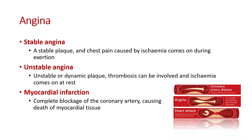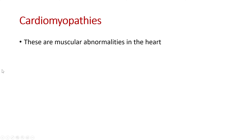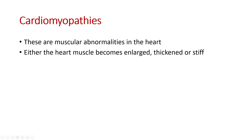Next we can talk about muscular abnormalities of the heart — myopathies or cardiomyopathies. These are abnormalities where the muscle becomes enlarged, thickened or stiff. There are many types: hypertrophic cardiomyopathy, dilated cardiomyopathy, restrictive cardiomyopathy, takotsubo or broken heart syndrome, and others. The ones we're most interested in are dilated and hypertrophic cardiomyopathy because they play a large role in heart failure.